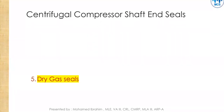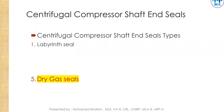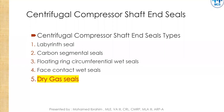Before talking about the dry gas seal, we will start by talking about its history. First, centrifugal compressor shaft end seals. It actually consists of many shaft end seal types. It started with labyrinth seals, then carbon segment seals, floating ring circumferential wet seals, and face contact seals. The last is the dry gas seal, which is the focus of our presentation today.